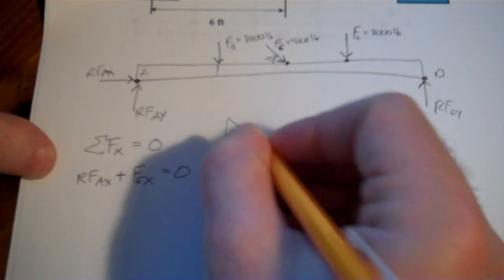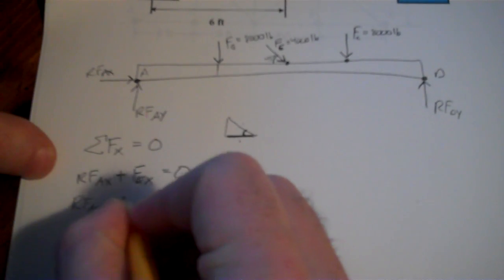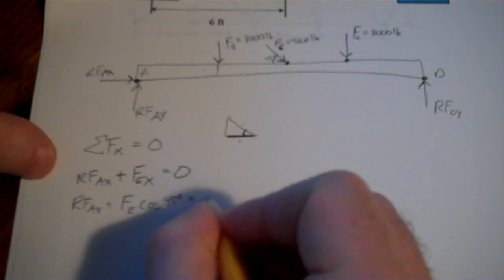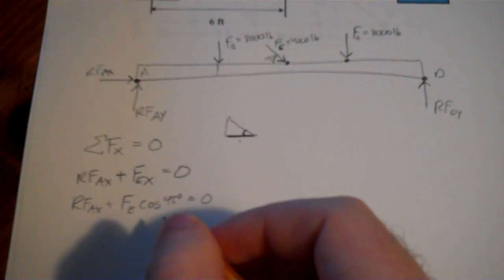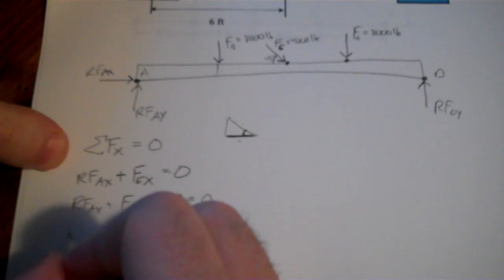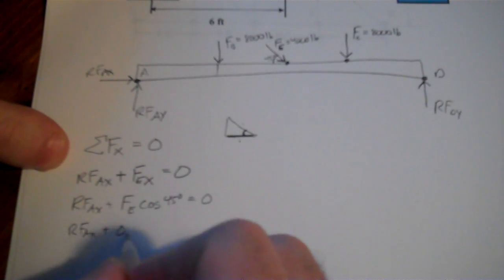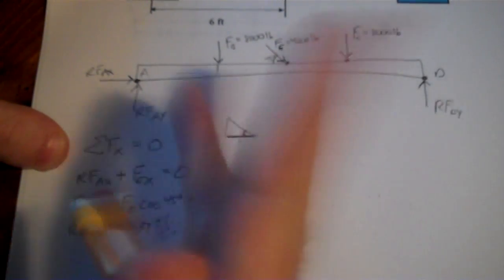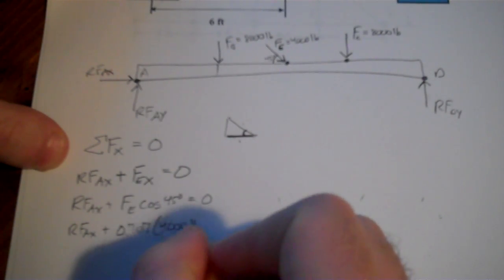That'll be cosine. So I can say RFAx plus FE times the cosine of 45 degrees equals zero. Now I believe the cosine of 45 degrees is going to be 0.707 or square root of 2 over 2. If you do this enough times, you'll end up remembering that. So plus 0.707, FE. Well, we know what FE is. Let's plug that in. That was 4,000 pounds. So 4,000 pounds. That's equal to zero.